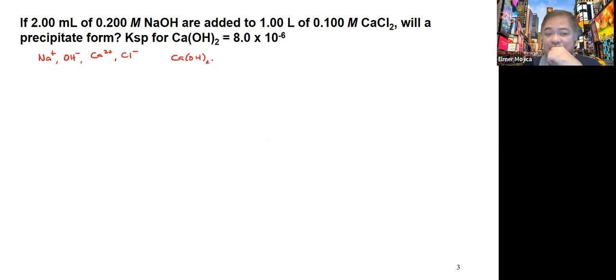If you're going to look at calcium hydroxide, usually it dissociates to give you calcium 2 plus ion and 2 hydroxide ions.